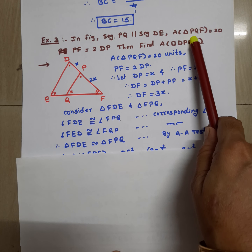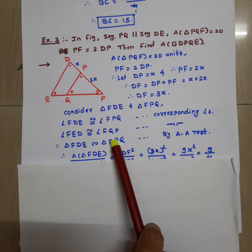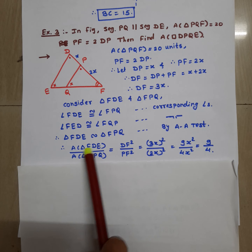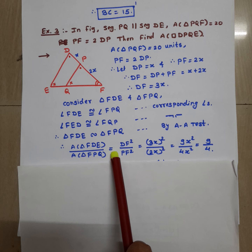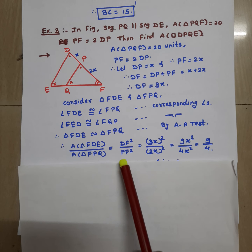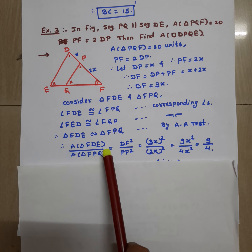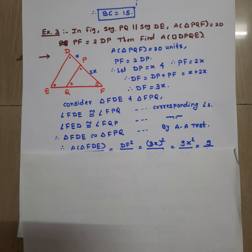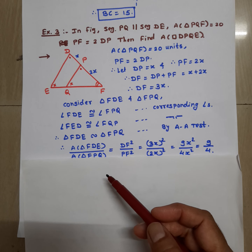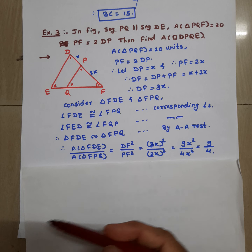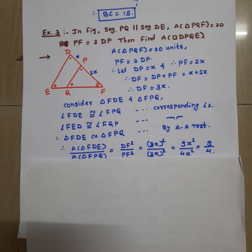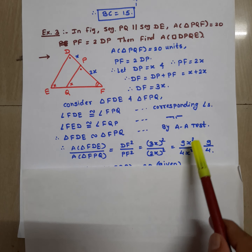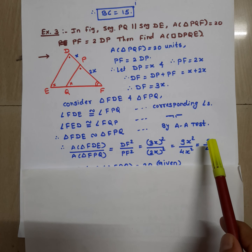You know the area of one of these triangles, so by the theorem of areas of two similar triangles: area of triangle FDE upon area of triangle FPQ is equal to DF square upon PF square. DF is 3X and PF is 2X, so this equals (3X) squared upon (2X) squared, which is 9X square upon 4X square. The X squares cancel, giving 9 upon 4.